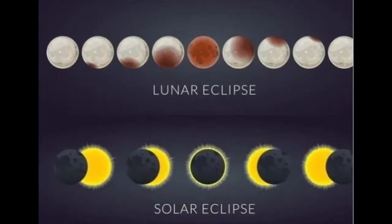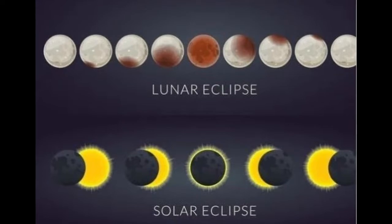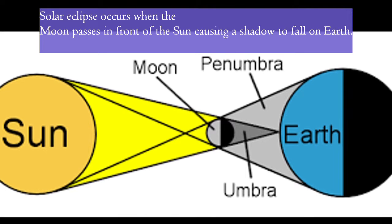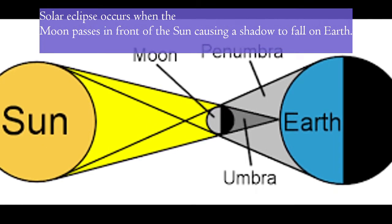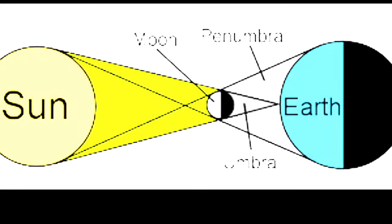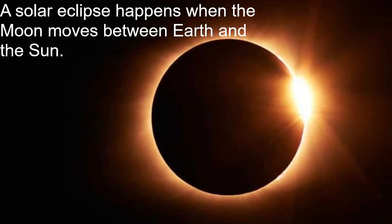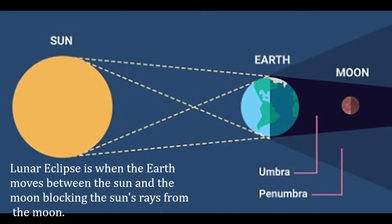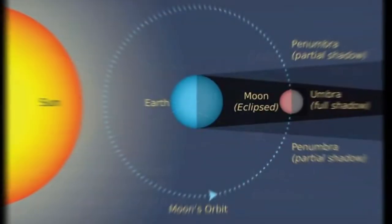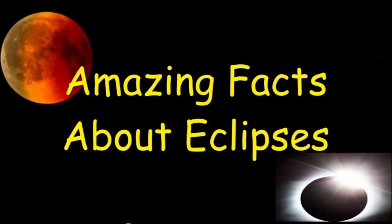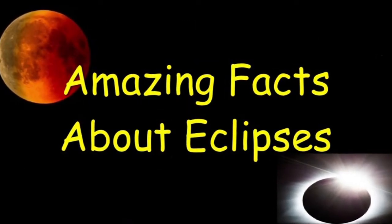There are two types of eclipses: a lunar eclipse and a solar eclipse. A solar eclipse occurs when the moon passes in front of the sun, causing a shadow to fall on the earth — or in simple words, when the moon moves between the earth and the sun. A lunar eclipse is when the earth moves between the sun and the moon, blocking the sun's rays from the moon. Now we're going to be talking about some amazing facts about eclipses.